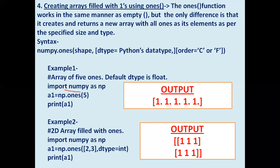We import NumPy library as NP and use np.ones with value 5 to get five elements in a 1D array stored in A1. The output shows five ones, all float with decimal points, because by default the NumPy array is float if you have not specified the data type.